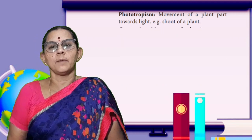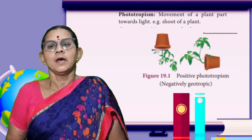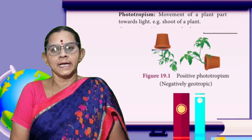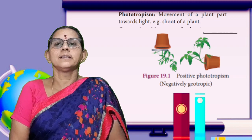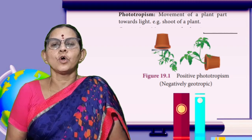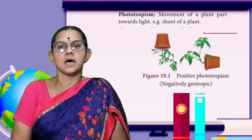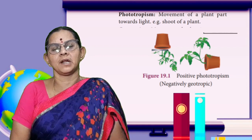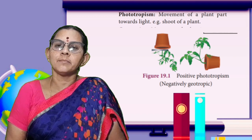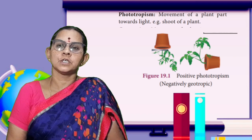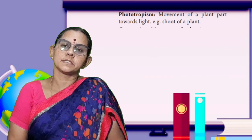Phototropism: 'photo' means light, so it is movement in the direction of light. For example, the stem or shoot system grows in the direction of light. That is the example for phototropism.